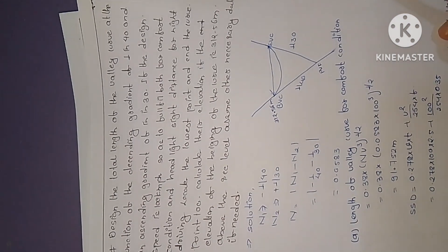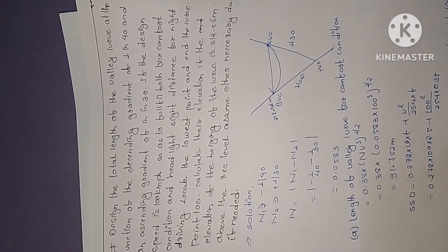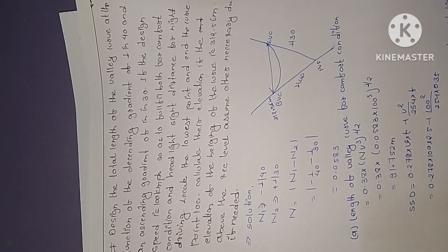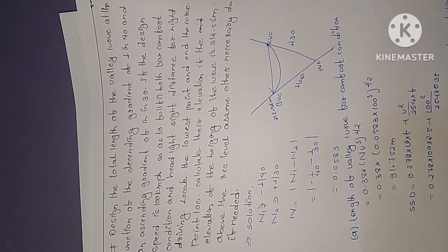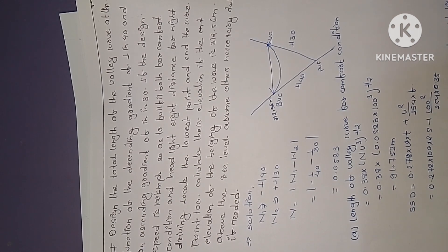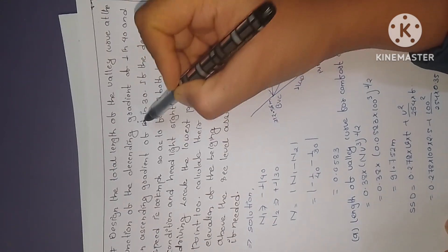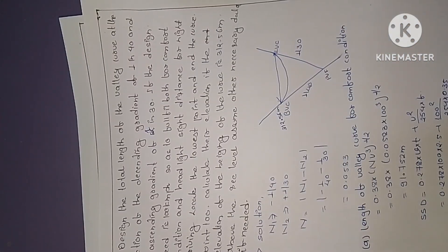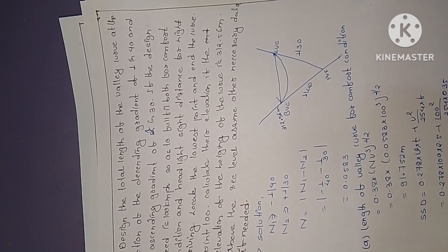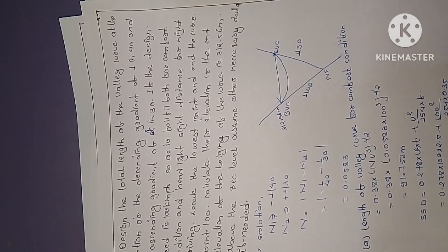Now let's do a numerical example. Design the total length of a valley curve at the junction of a descending gradient of 1 in 40 and an ascending gradient of 1 in 30. The design speed is 100 km/h, satisfying both the comfort condition and headlight sight distance for night driving. The elevation of the beginning of the curve (BVC) is 312.56 m above sea level.